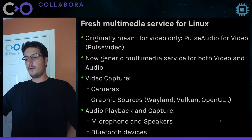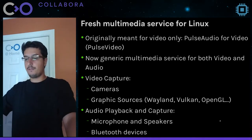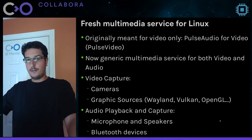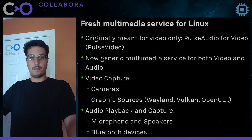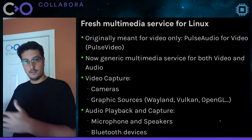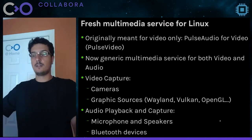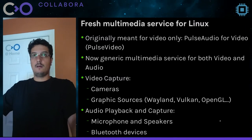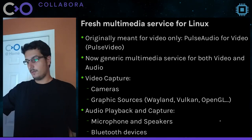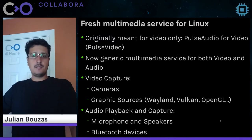With PipeWire, applications can capture video from different video sources such as cameras or even graphic sources — for example, if you want to capture your desktop via Wayland or Vulkan. You can also do capturing and playback of audio: capture from a microphone, do audio playback using a speaker or even Bluetooth devices. Applications can do all of that very easily without worrying about configuring devices or using low-level APIs such as Video for Linux, Vulkan, Wayland, ALSA, or Bluetooth's complex APIs.